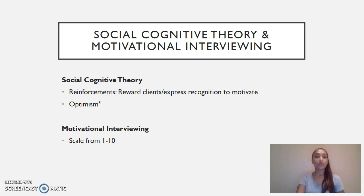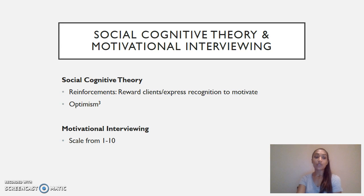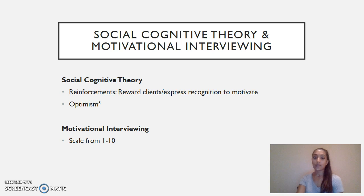Clients are provided with internal and external reinforcements which follow the social cognitive theory, carried out by rewarding clients and showing recognition. In motivational interviewing, positive reinforcements are used to motivate clients. In both the social cognitive theory and motivational interviewing, optimism is a key component. An example of applying motivational interviewing is to ask clients at the end of a session how confident they feel on a scale from 1 to 10 that they will have a successful week. If a client answers with a 3, they can be asked why they chose a 3 versus a 1. This method works to keep clients motivated, optimistic, and positive rather than viewing their answer in a negative way.